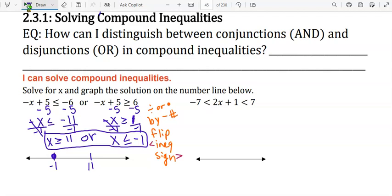We'll put closed points because they have equal to in their signs. Since it's OR, we shade the outside of the number line.